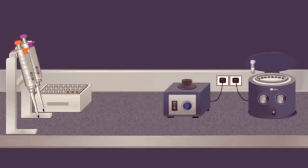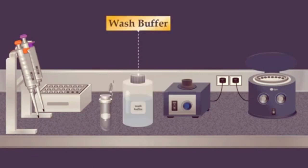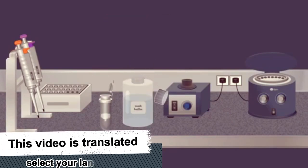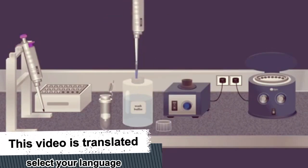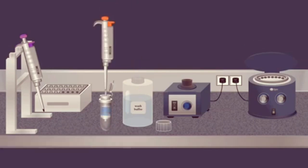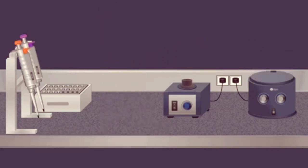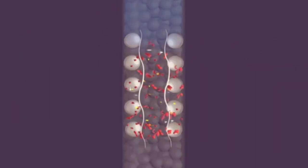After centrifugation the spin column is placed into a clean collection tube, and the filtrate is discarded. Then a wash buffer is added. The column is put in a centrifuge again, forcing the wash buffer through the membrane. This removes any remaining impurities from the membrane, leaving only the RNA bound to the silica gel.